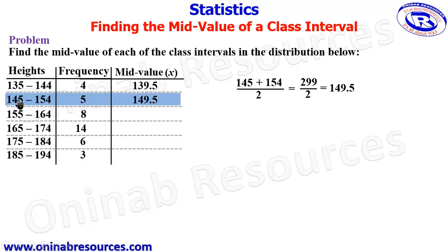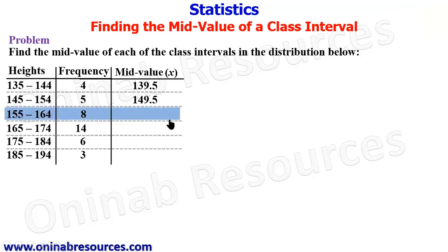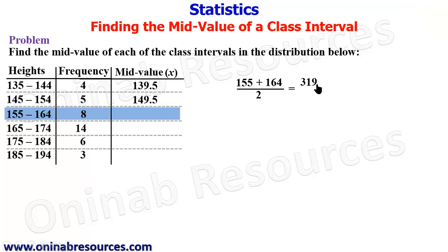For the third class interval, we have 155 to 164. Adding the lower class interval to the upper class interval and dividing by 2, we get 319 divided by 2, which gives 159.5, representing the mid value of the third class interval.